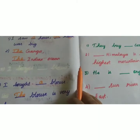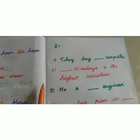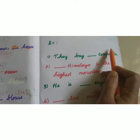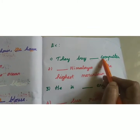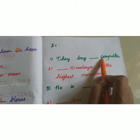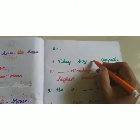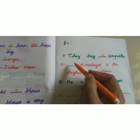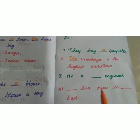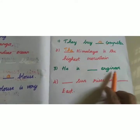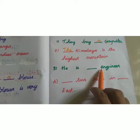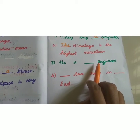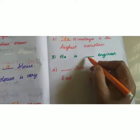Now all of you write the exercise. 'They buy a/an — computer.' See the noun after the blank: first letter is C. C is in the consonant, not a vowel, so the answer is A. Himalaya — when you see Himalaya, you immediately write THE. 'He is a/an — engineer.' First letter of engineer is E. E is in the vowels, so we write AN.